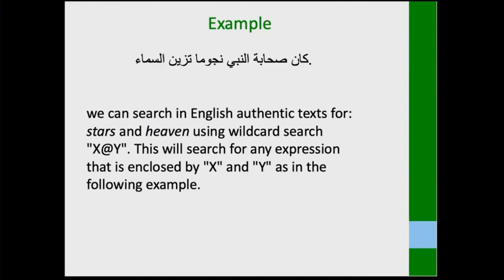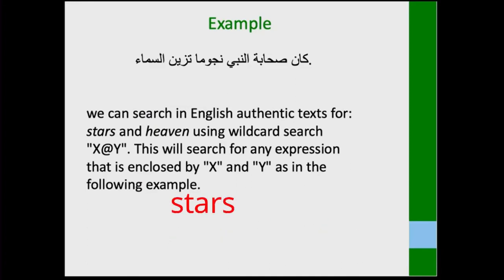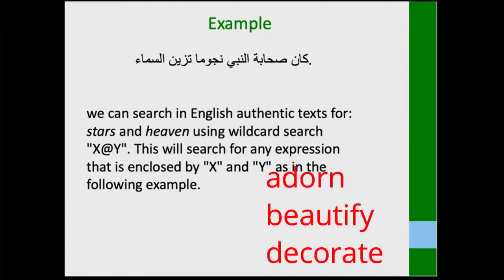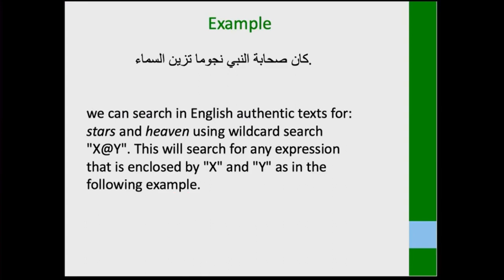Everybody can translate صحابة into 'companions,' النبي into 'prophet,' نجوما into 'stars,' and تزيين — you can find options in dictionaries: it could be 'beautified,' 'adorn,' or 'decorate'; السماء could be 'heaven' or 'sky.' But to get to the literary usage, you need to check literary texts.